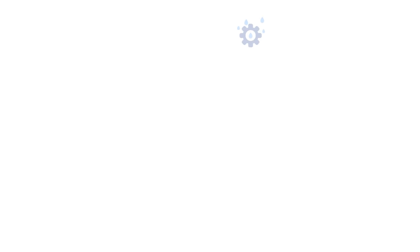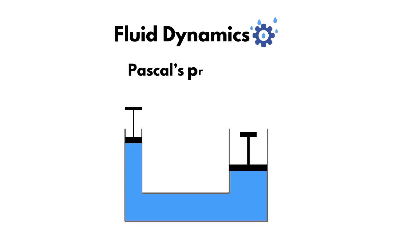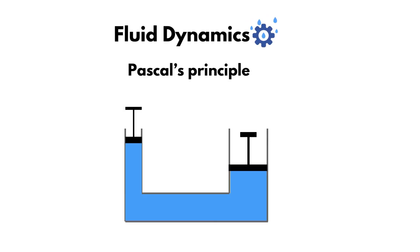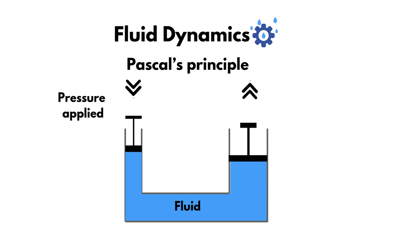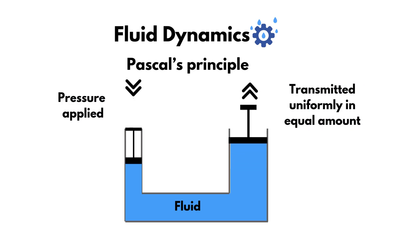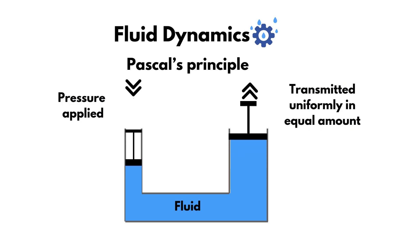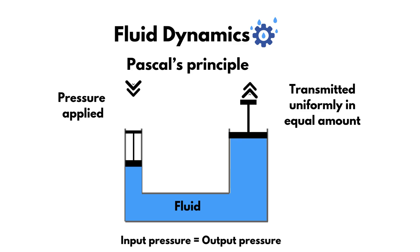In the field of fluid dynamics, Pascal's principle asserts that when pressure is applied to a confined fluid, the applied pressure is transmitted uniformly throughout the fluid in equal amounts. This indicates that the pressure at the input is equivalent to the pressure at the output.